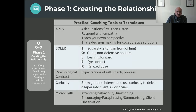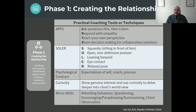Here are some practical tools you can utilize. To establish rapport, you can use the ARTS process: ask questions, then listen, respond with empathy, teach your own perspective, and share the decision-making process. SOLAR is a set of micro skills to help establish relationships: always sit square in front of a person, have an open posture, lean a little bit forward when the person is talking, try to maintain eye contact, and have a relaxed pose. Also use psychological contract, show genuine curiosity and interest in people, and utilize other micro skills like attending, questioning, and paraphrasing.